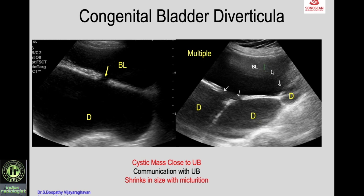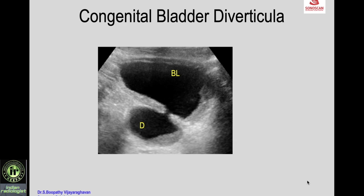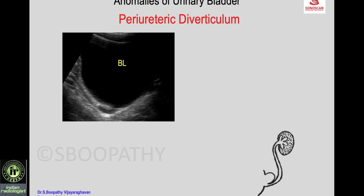The diverticulum can be multiple, as seen here where the bladder shows multiple cystic masses each communicating with the urinary bladder. A complication of vesical diverticulum is infection, which can be seen as debris within the diverticulum.